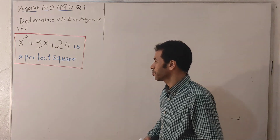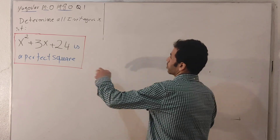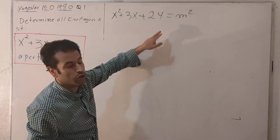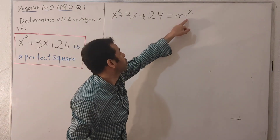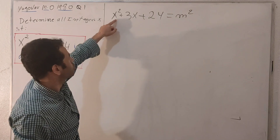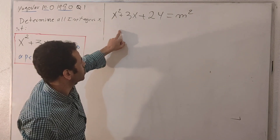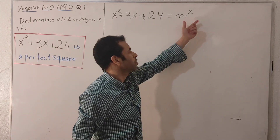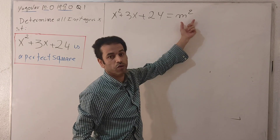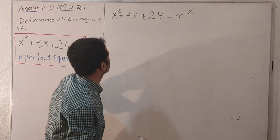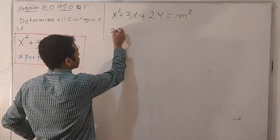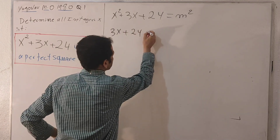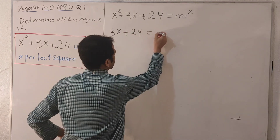We have the following expression. If you look at both sides of this equation, we have m squared on one side and x squared here, so I'm going to move x squared to the right in order to get the factorization. We'll have 3x plus 24 equals m squared minus x squared.